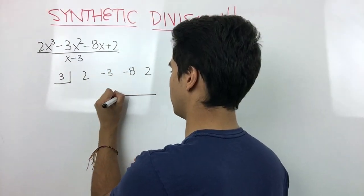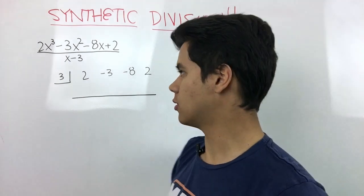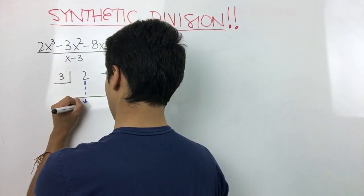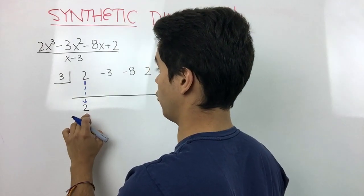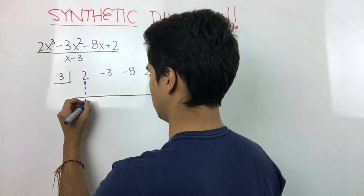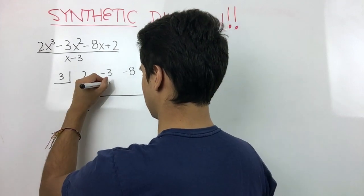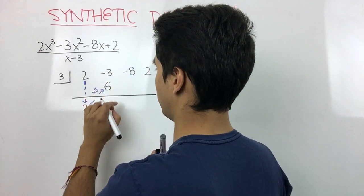We're going to draw a line here. Next we have to bring our first number down, so we put it in here. Then we take this number and multiply it by our constant, so we take this number and multiply it by 3. So we get 6 in here. Then we just add those numbers together. So 6 minus 3 is 3, and we repeat the same step.